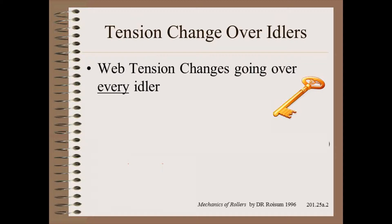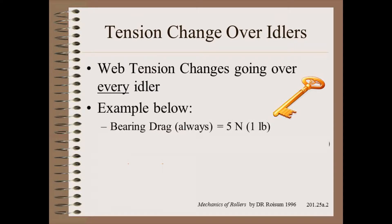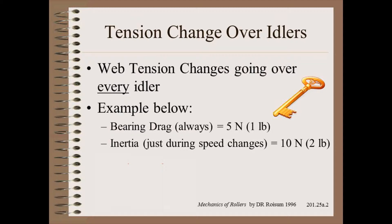Here we are going to expand on this with a simplified example where the bearing drag is about 5 newtons, or about one pound. Inertia, which is seen only during speed changes, will be twice that. Thus, in steady state run, the tension will rise by 5 newtons on every single idler roller. This is because web tension supplies the power to turn idler roller bearings.